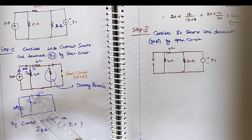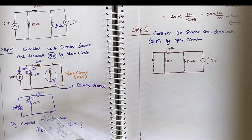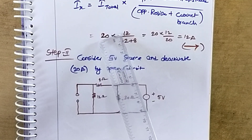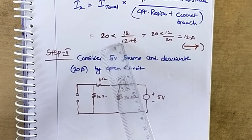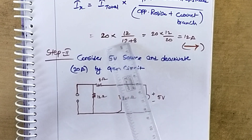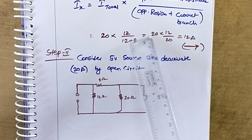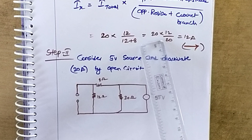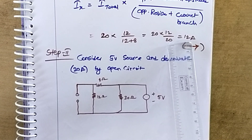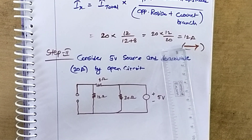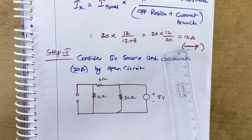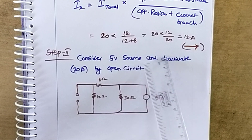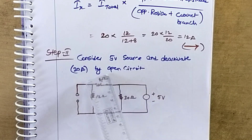Substituting the values: total current entering is 20 amps, opposite branch resistance is 12 ohm, and current branch resistance is 8 ohm. Therefore i1 = 20 × 12 / (12 + 8) = 12 amps, flowing in the right-hand side direction. Now moving to step two.